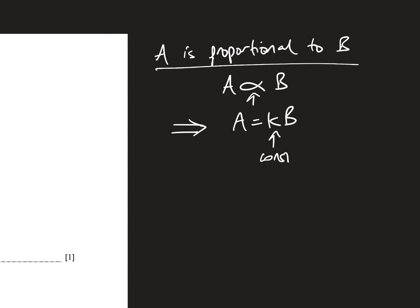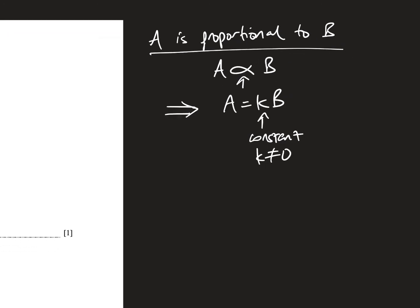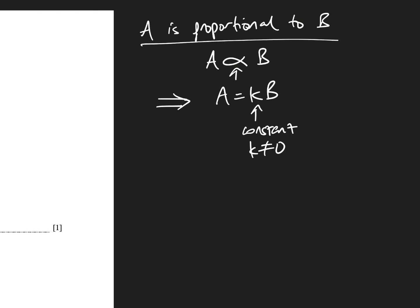So if I said something like, A is proportional to B, usually we will write this symbol, this symbol means proportional to B, and what it really really means is that A is equal to K times B, where K is some constant, some number, and K cannot equal to 0, so it cannot be A equals to 0 times B, that wouldn't make sense.